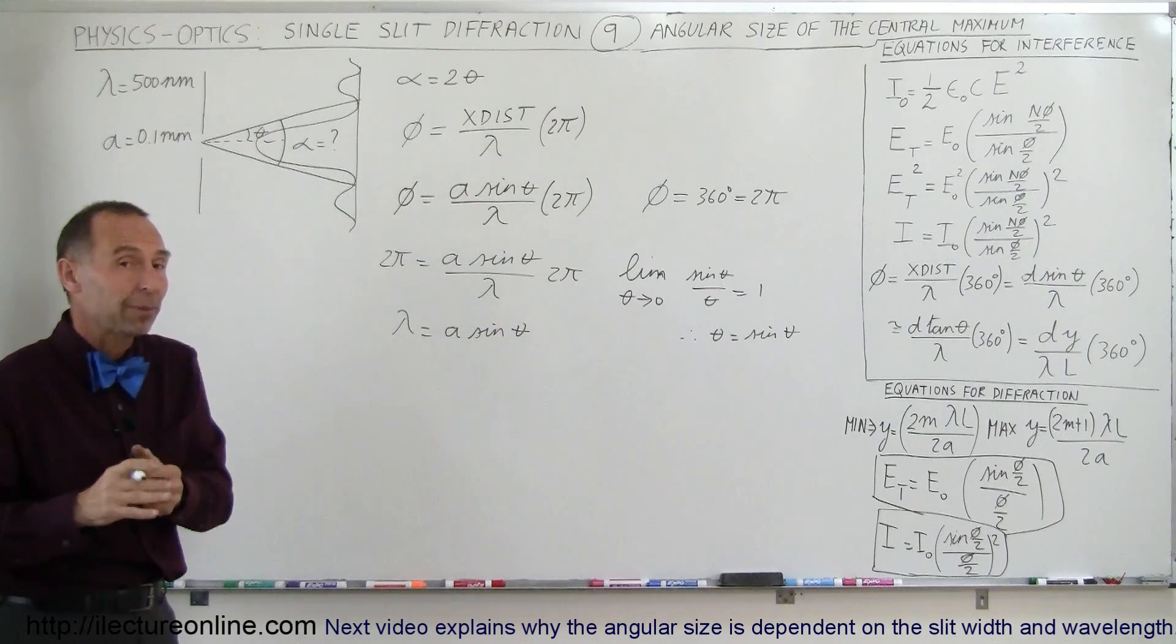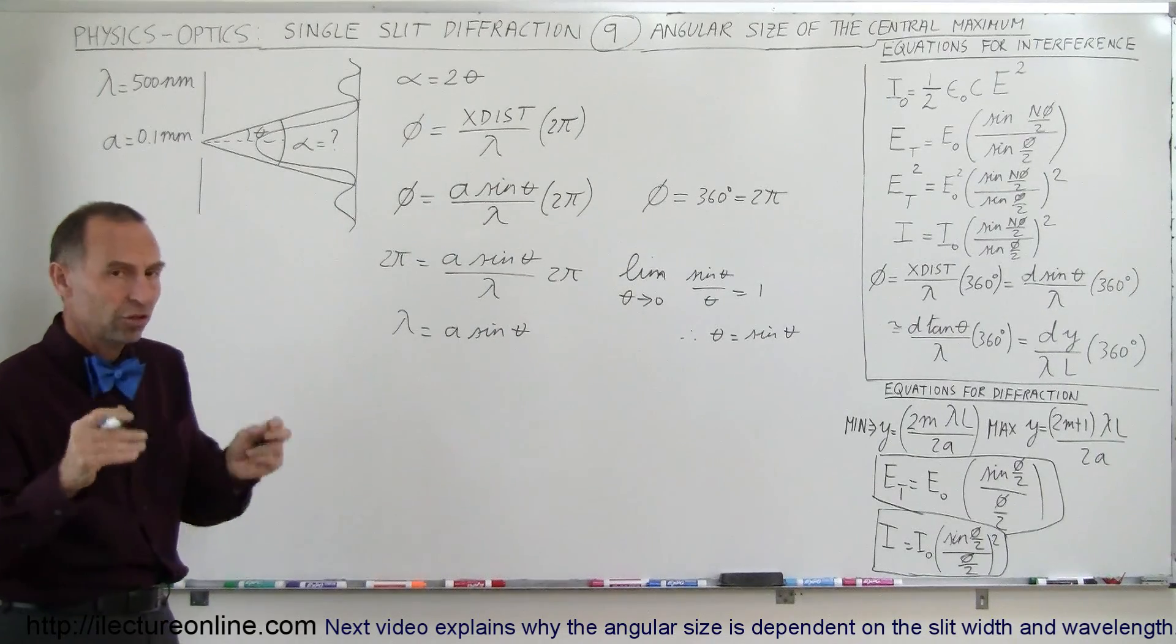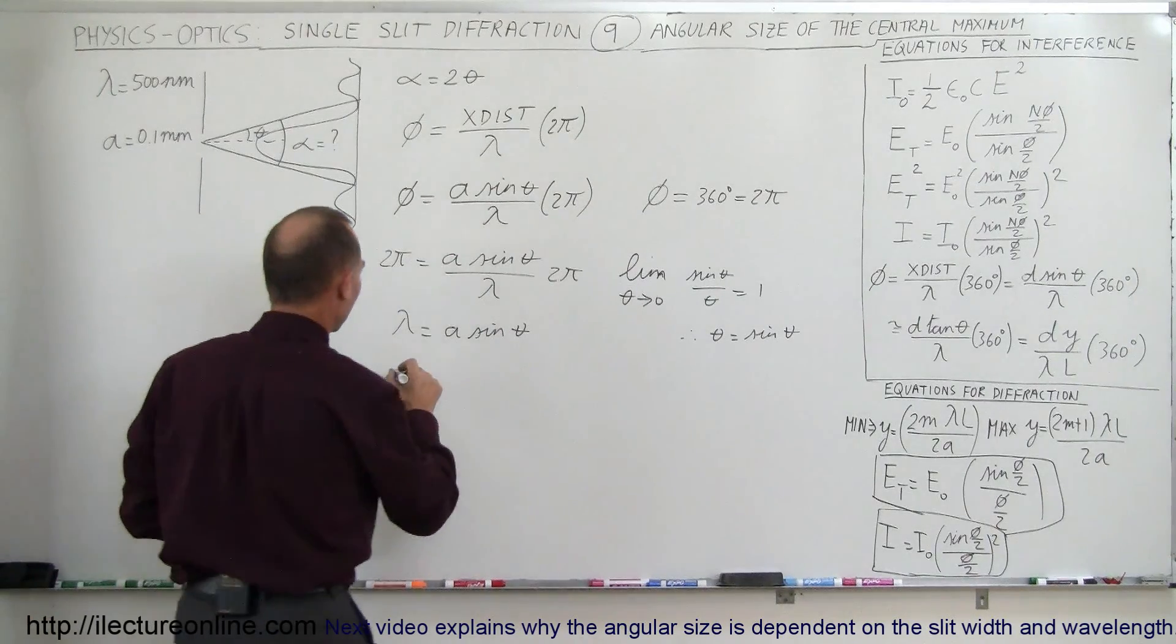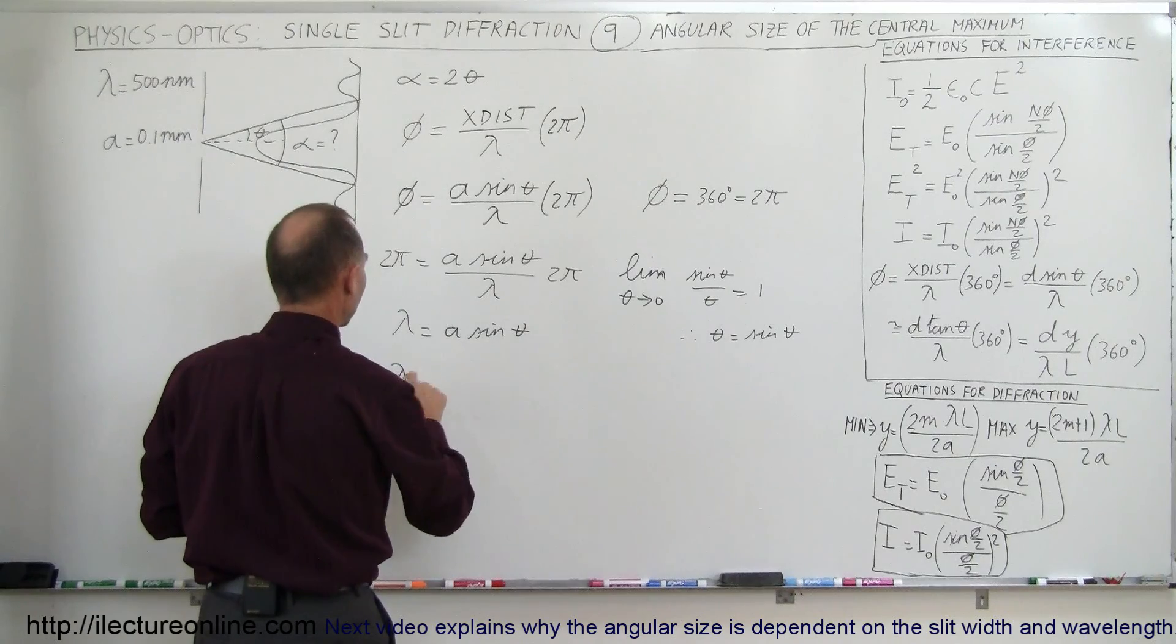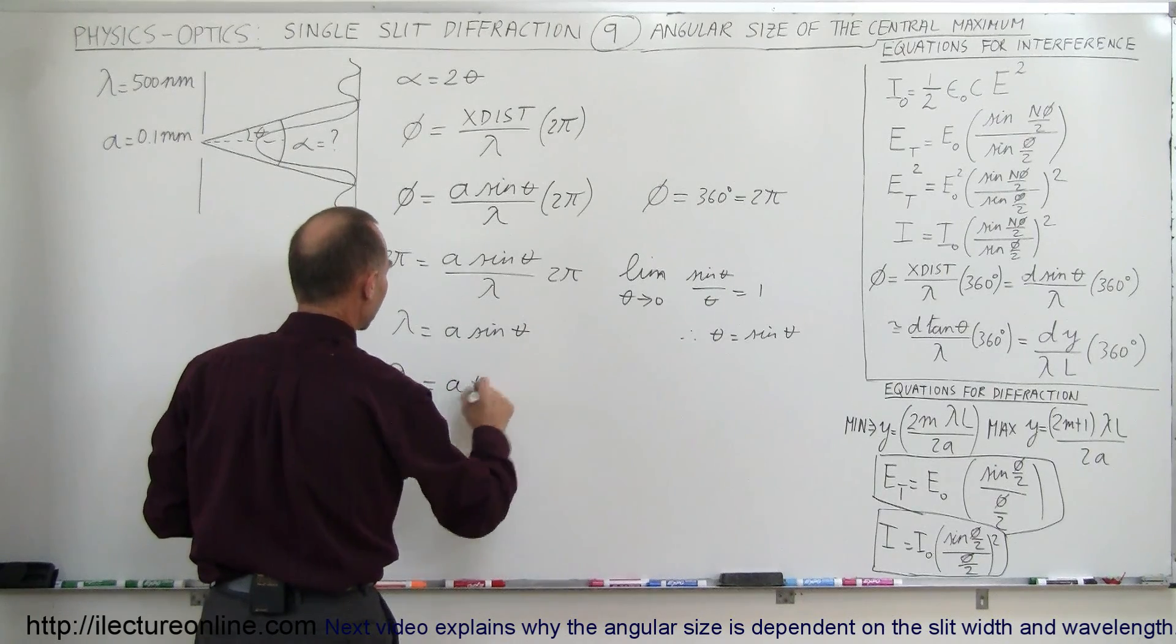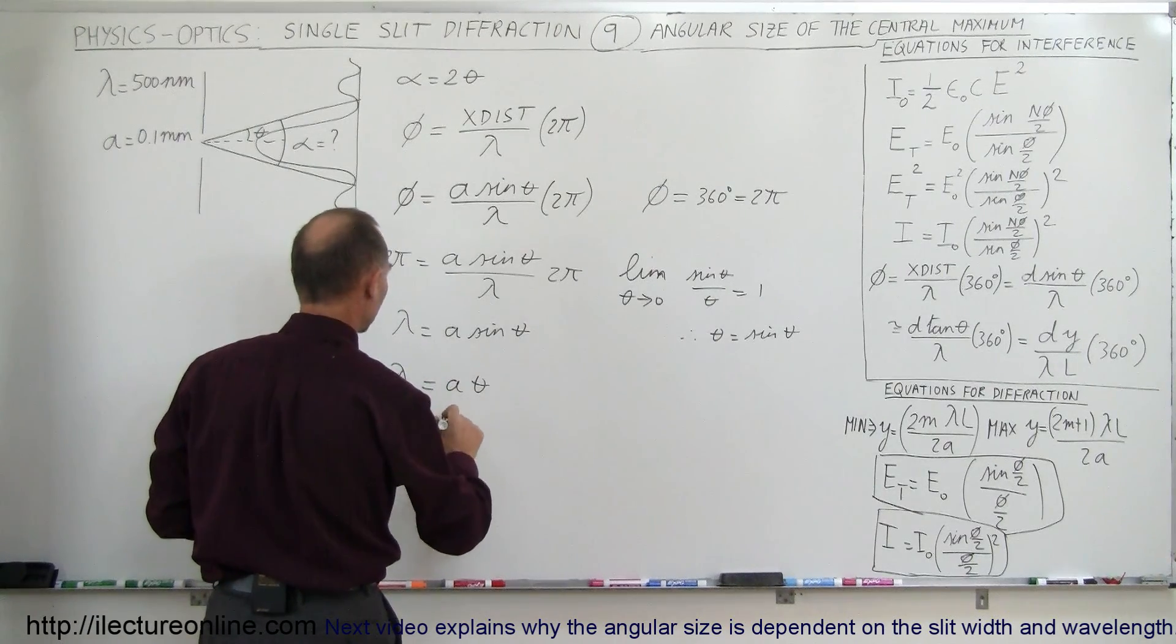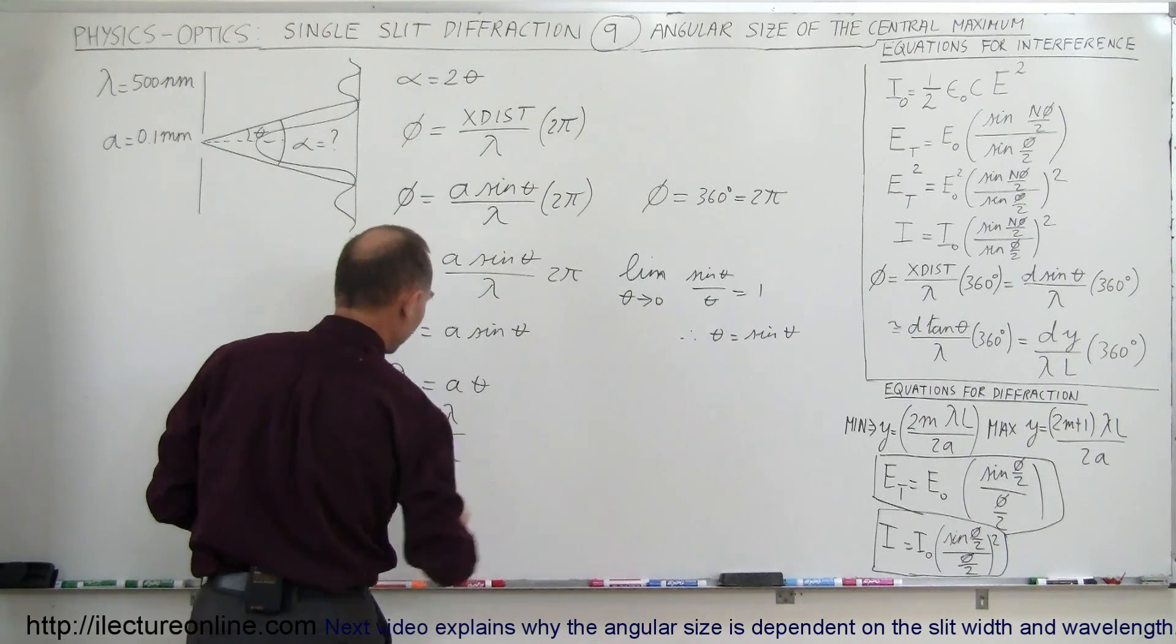So for small angles we can get away by replacing sine of theta by theta, as long as theta of course is in radians. And so therefore the wavelength is equal to a times theta, or theta is simply equal to the wavelength divided by a.